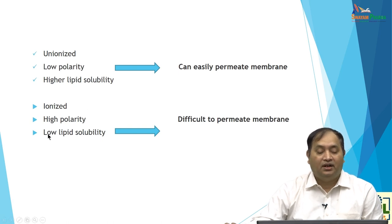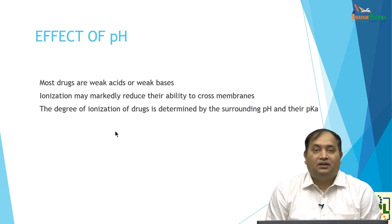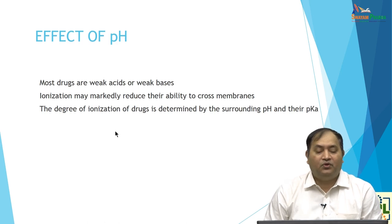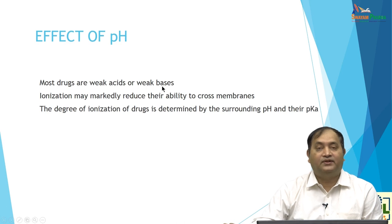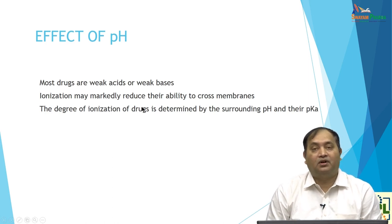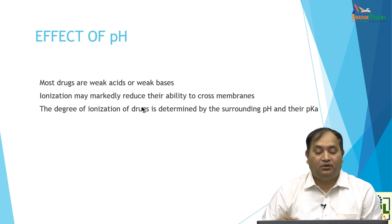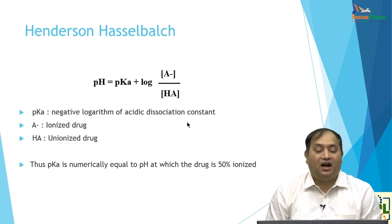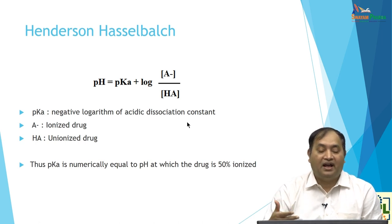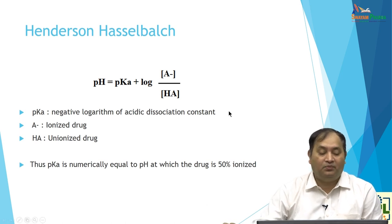For a drug that is non-ionized, low polarity, or high lipid solubility, it can easily pass through the cell membrane because it is a lipid bilayer. But an ionized drug takes more time — high polarity or low lipid solubility makes it difficult to penetrate the membrane. That is the reason some drugs which are less absorbed may require a different preparation. Most drugs that are weak acids or weak bases are affected by pH. The degree of ionization is determined by the surrounding pH and pKa.